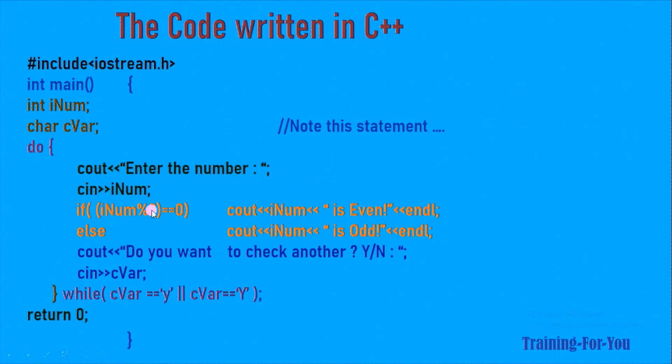The rest remains same. The loop body: we have accepted the number, tested whether it's even or odd, displayed that. Then we have asked the user whether he wants to continue or not. If anything other than y is entered, then this condition will become false and the control will come after this whole do while loop.